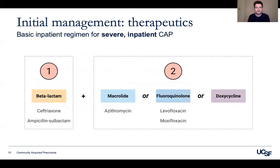The basic inpatient regimen for severe inpatient CAP has two drugs. First, a beta-lactam — very commonly ceftriaxone, although other options include ampicillin-sulbactam. Second, an agent from one of these classes: macrolides such as azithromycin, fluoroquinolones, or doxycycline/tetracycline as a substitute second agent.